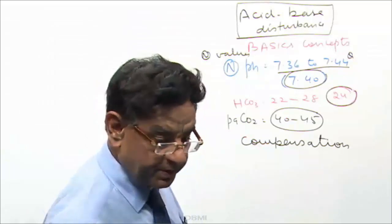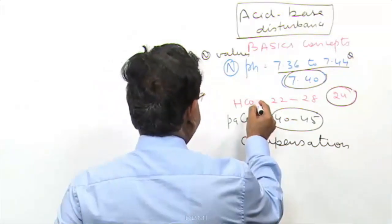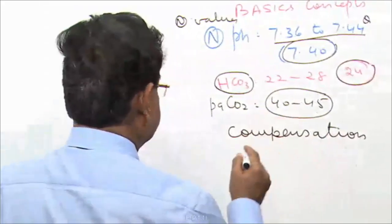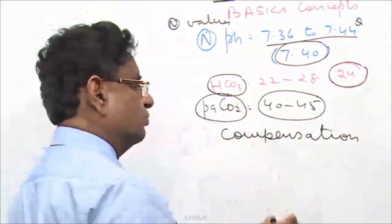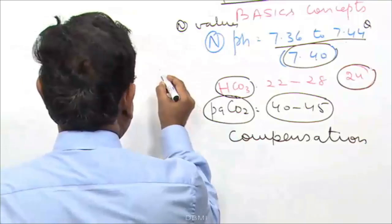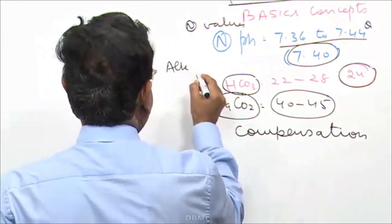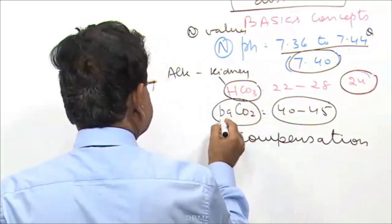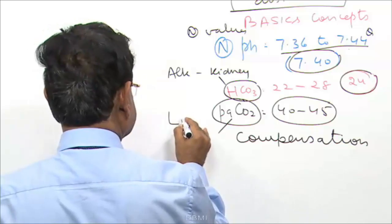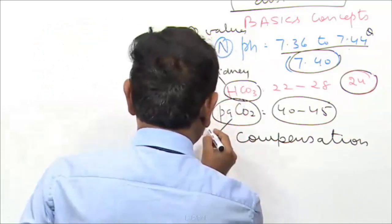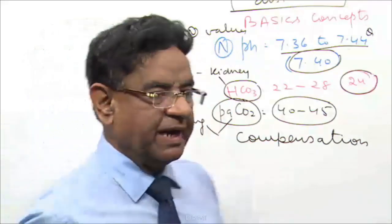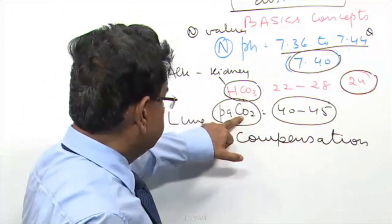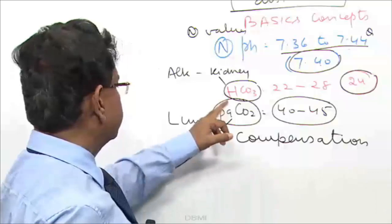Bicarbonate is alkali, being controlled by kidneys — this you know. And CO2 is acid, being controlled by the lungs. Even a child of 7th class knows that CO2 is controlled by lungs. So bicarb is alkali controlled by kidneys, and CO2 is acid controlled by lungs.